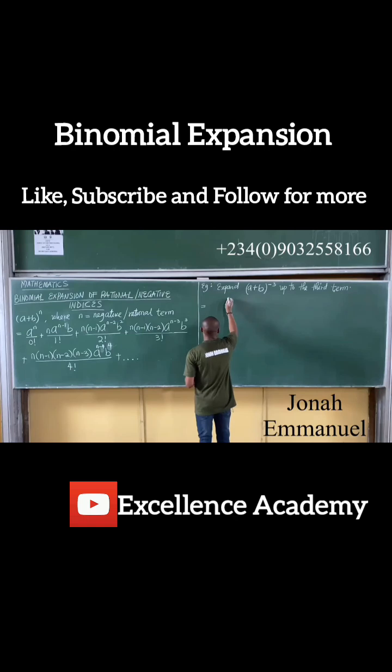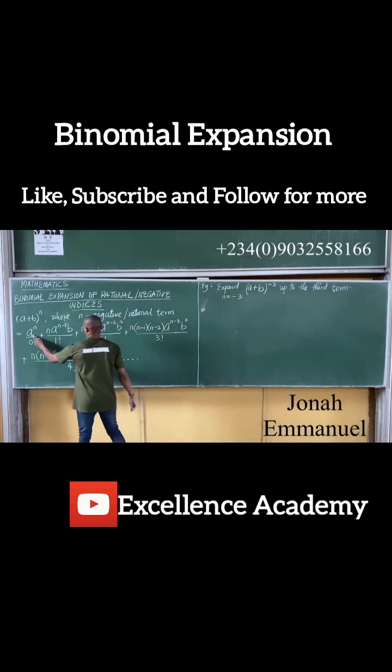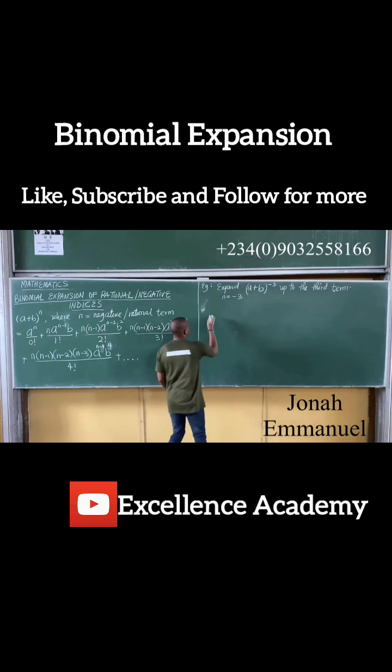In this case now, n is minus 3. That's the index. So how do you expand this? We said a to power n becomes a to power n. What's n then? Minus 3. All over zero factorial.